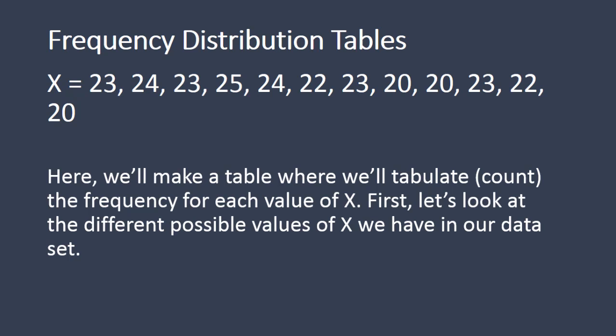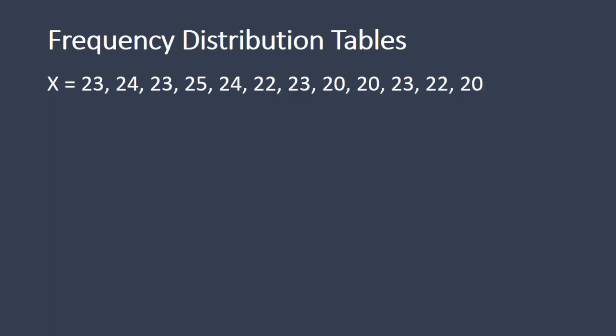First, let's take a look at the different possible values of X that we have in our dataset. Notice in our above example that we have the values of 20. There's no 21 here, but we have 22, 23, 24, and 25.